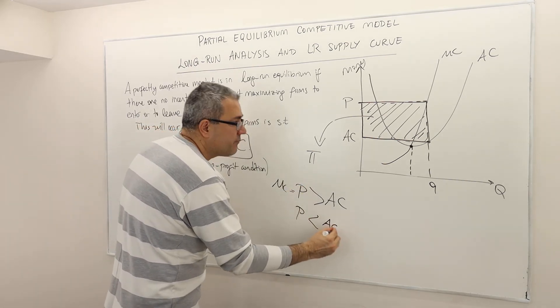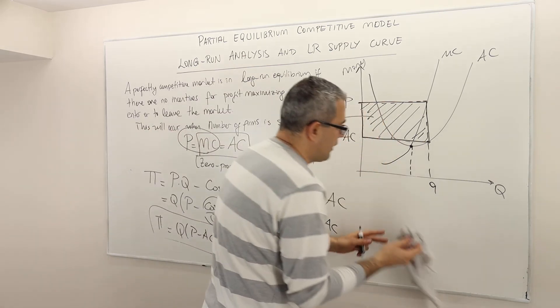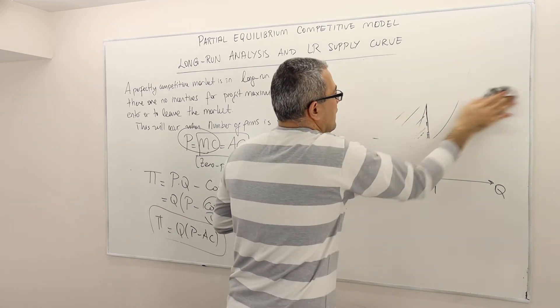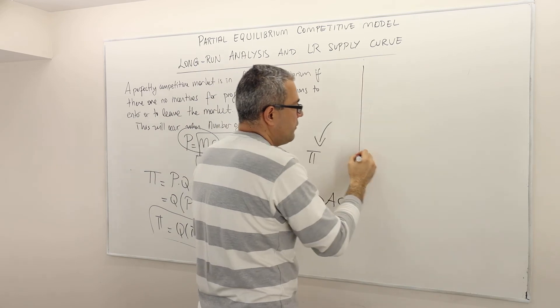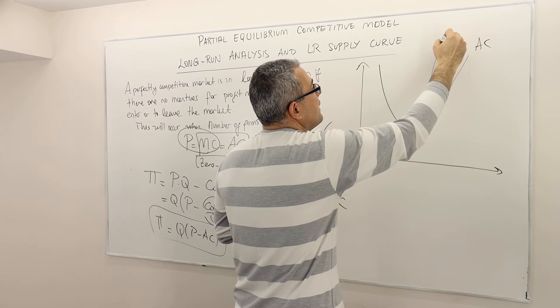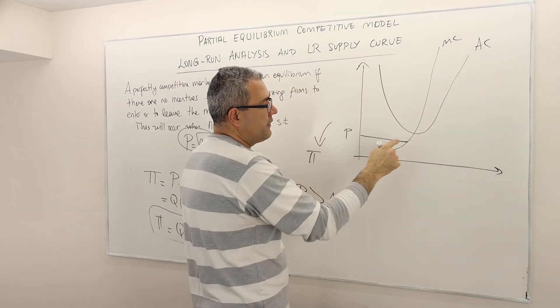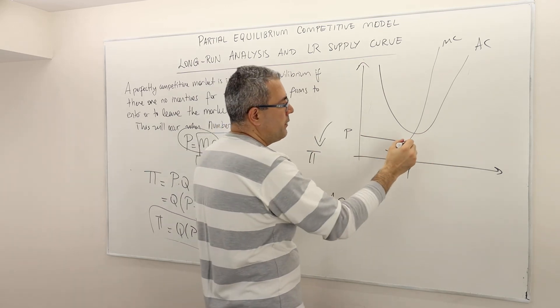What if P is less than AC? Let's very quickly draw this. Exactly the same graph. So I'm not going to tag the boundaries. Again, this is AC, this is MC, the marginal cost. So this is the price. So if this is the price, this is how much optimal quantity the firm should be producing.